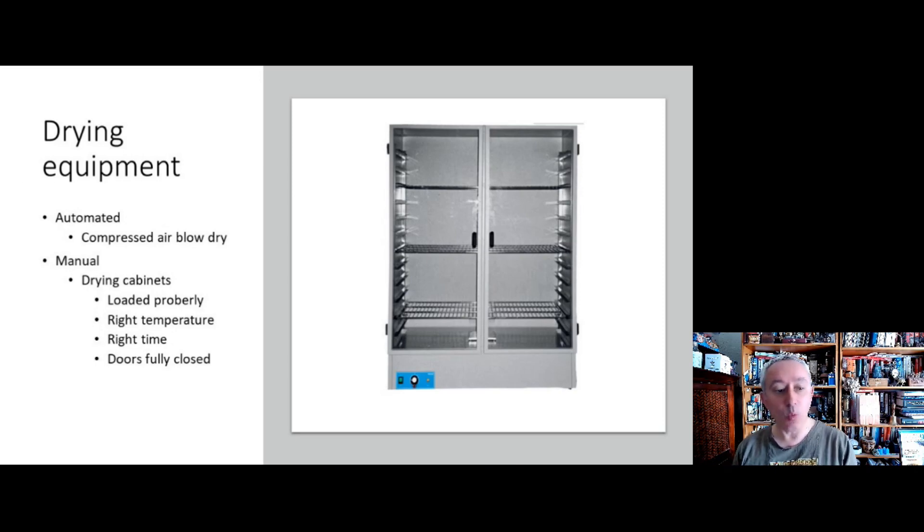There are different ways to dry equipment. There are automated processes using compressed air that can rapidly dry equipment. Or sometimes the application of 70% IPA can help dry because as the alcohol evaporates, it takes more water with it as well. Or there are drying cabinets like the example on the screen, which is a GenLab cabinet. These can dry very effectively and they don't cost very much.